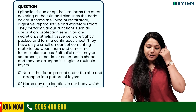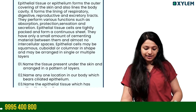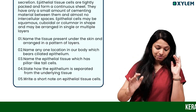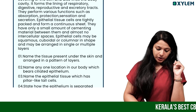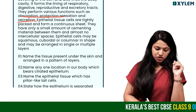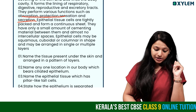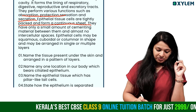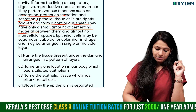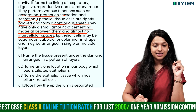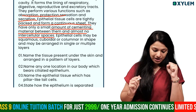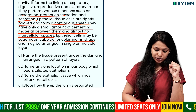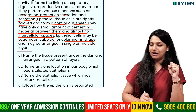Another 5-mark question: epithelial tissue or epithelium forms the outer covering of skin and also lines the body cavity. Epithelial tissues are tightly packed and form a continuous sheet with only a small amount of cement material between them and almost no intercellular space. Their functions include protection, sensation, absorption, and secretion. Epithelial cells may be squamous, cuboidal, or columnar in shape.